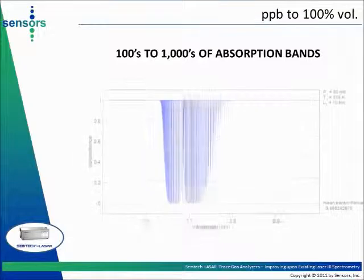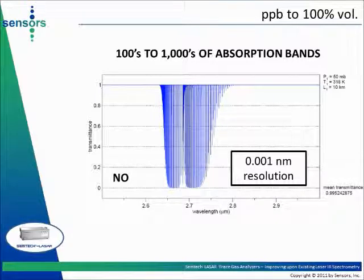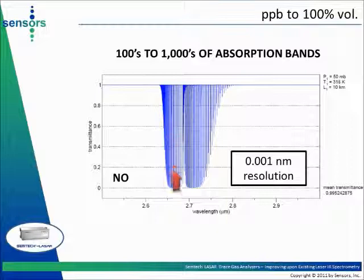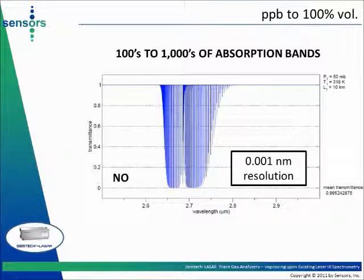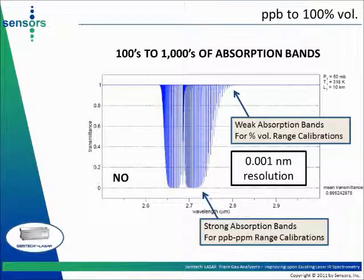The Semteklas R can be calibrated for trace concentration in high concentration ranges. The optical resolution of one picometer enables the observation of very narrow energy absorption bands. At that level of resolution, each gas features a large number of absorption bands in the infrared region, sometimes numbered in the thousands. Careful selection of the absorption bands measured allows calibration of the analyzer over wide ranges of concentrations. Weak absorption bands will be selected for high concentration calibration ranges; strong absorption bands will be selected for trace concentration calibration ranges.